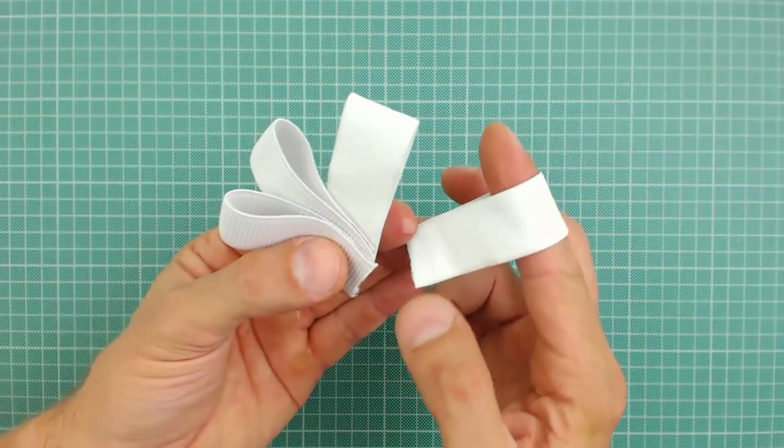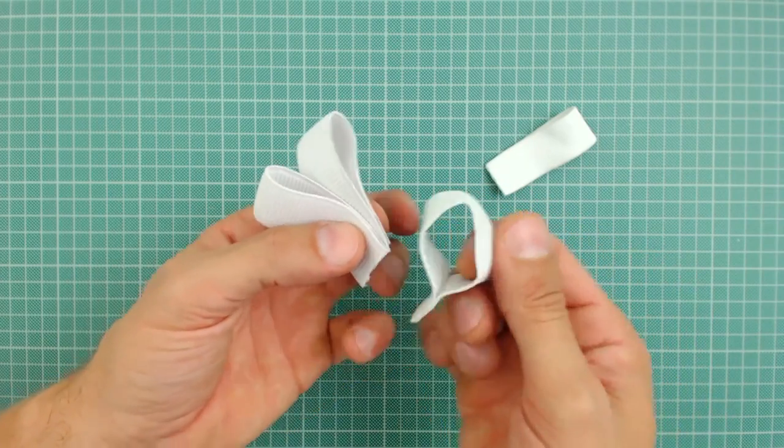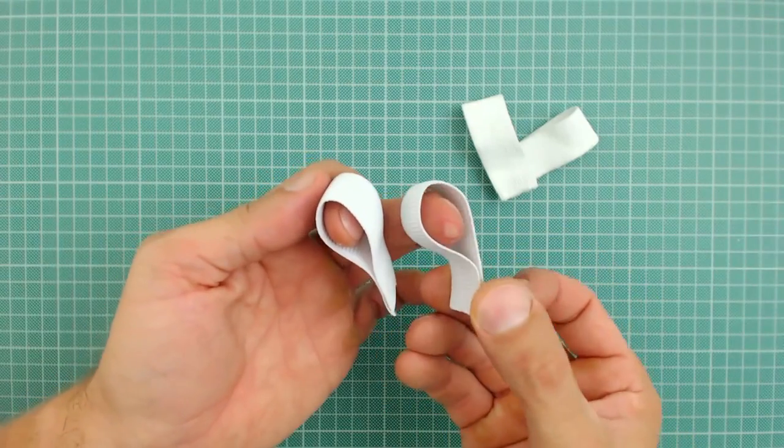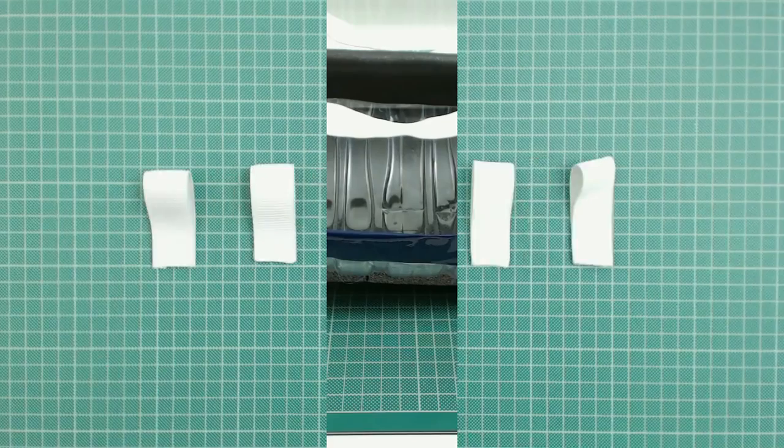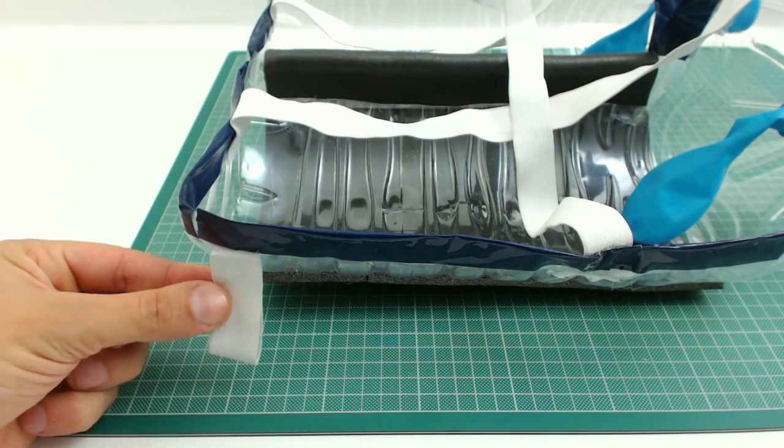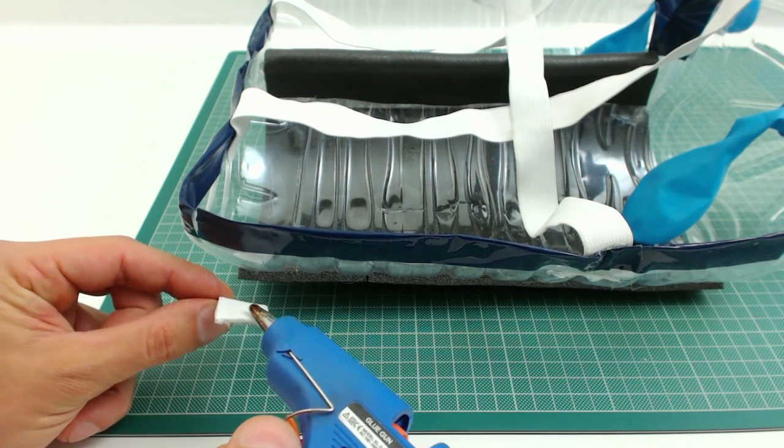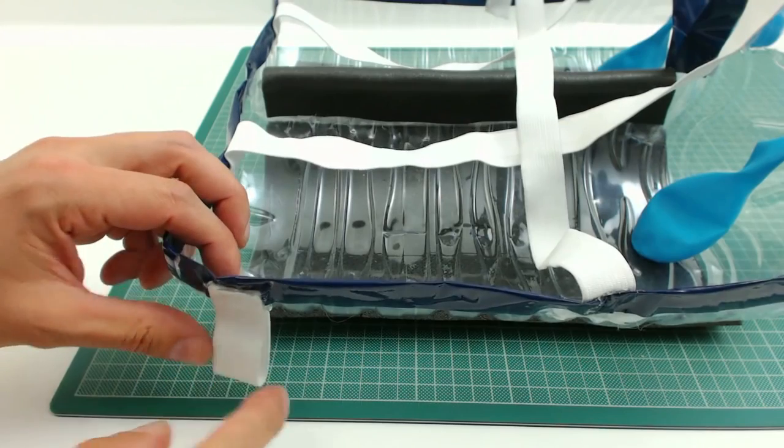Two of these will go on the bottom on both sides, and the other two will go at the top. By the way, I forgot to mention that I did this with hot silicone. Glue them as shown in the video. Once they cool down they are quite strong. Do the same on the opposite side.